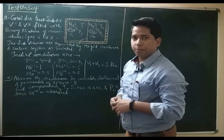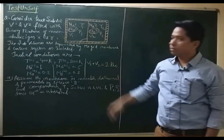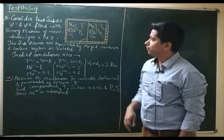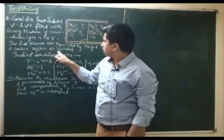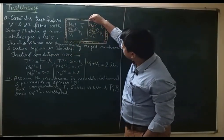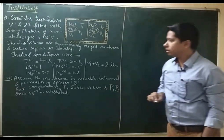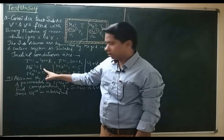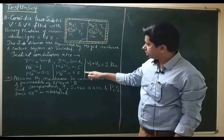Consider two sub-volumes P1 and P2 filled with a binary mixture of monoatomic ideal gas A and B. The sub-volumes are separated via a rigid membrane and the entire system is isolated. Initial conditions: T1 is 400 K, Na1 is 1 mol, Nb1 is 0.2 mol. Similarly, on the right-hand side, initial conditions are given. The summation of both volumes is 2 liters.